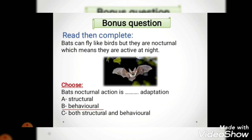Let's solve the bonus question together - this is for smart students only, and I'm confident all my students are smart. Bats can fly like birds but they are nocturnal, which means they are active at night. Bats' nocturnal action is a behavioral adaptation. Why behavioral and not structural? Because it has nothing to do with any part of its body - it relates to what it likes to do - it likes to be awake at night. So it's a kind of behavior.